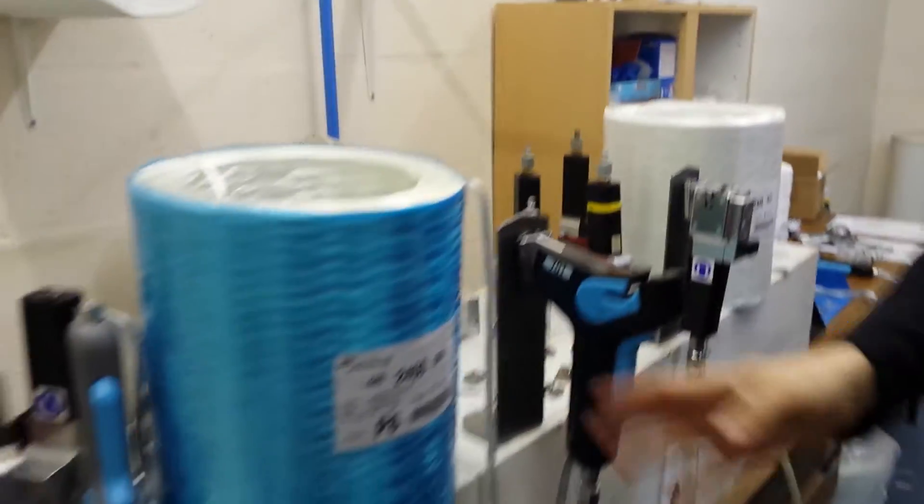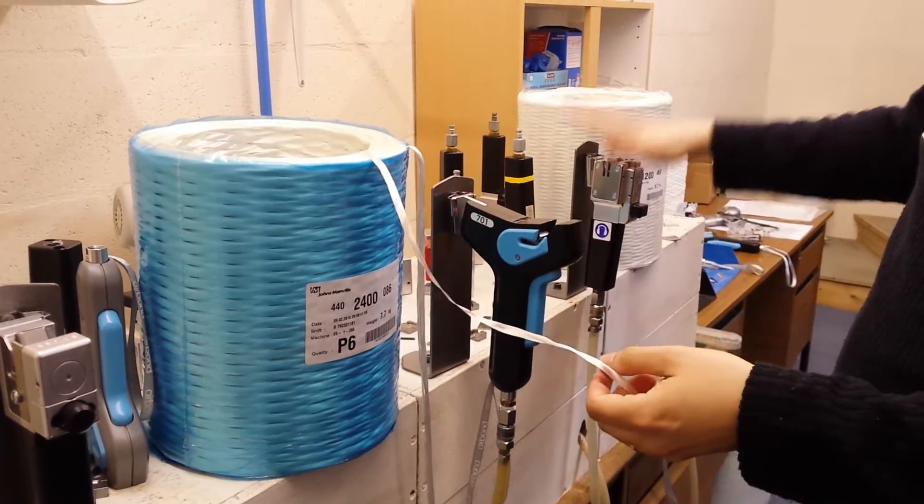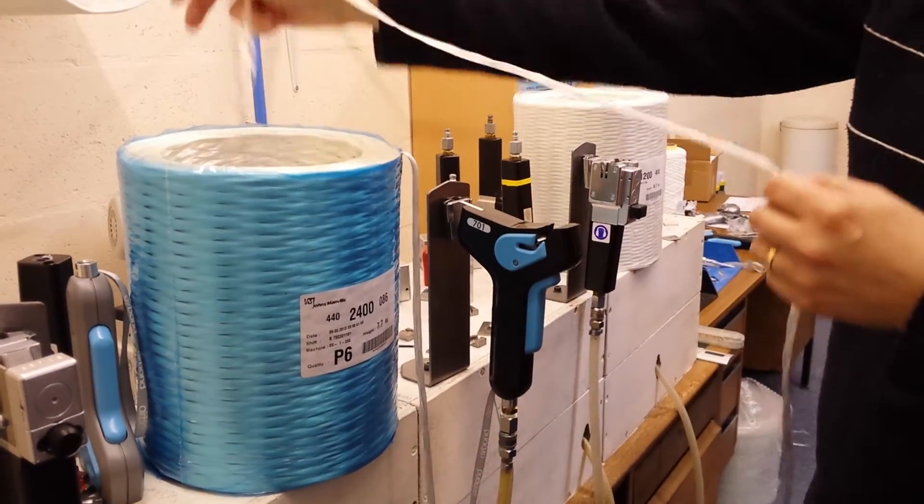This is the model 701. This can achieve a much higher strength than the 111, especially for 2,400 tex.